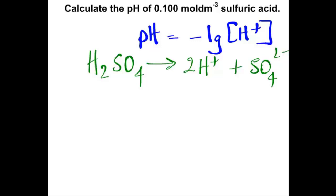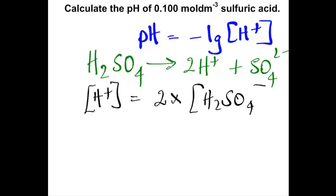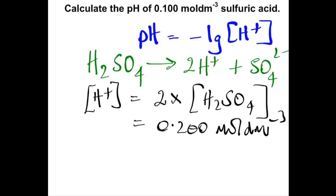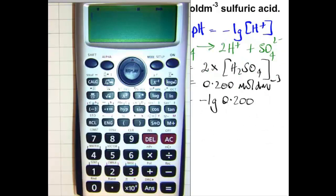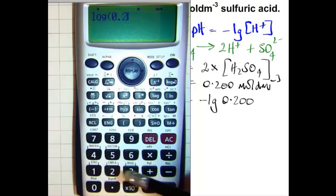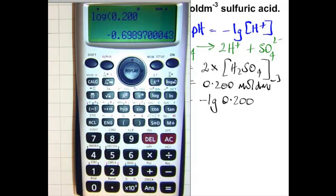Sulfuric acid is described as a dibasic acid because it produces 2 moles of hydrogen ions per mole of acid. That means the concentration of hydrogen ions will be twice the concentration of the acid — twice 0.1 — so 0.2 mole per cubic decimetre. Taking the negative log of 0.2 on the calculator gives minus 0.70, and minus by minus gives a pH of 0.7.